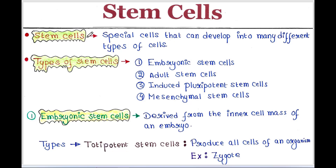Stem cells are special cells that can develop into many different types of cells. Let's talk about different types of stem cells: embryonic stem cells, adult stem cells, induced pluripotent stem cells, and mesenchymal stem cells. Let's talk about them one by one.